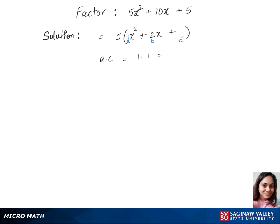So a times c is 1 times 1 which is 1, and the sum of this pair is 2 and this matches up with our middle term's constant. We can use those values to plug into our expression, so that's 5 times